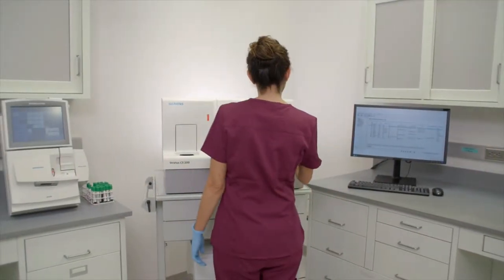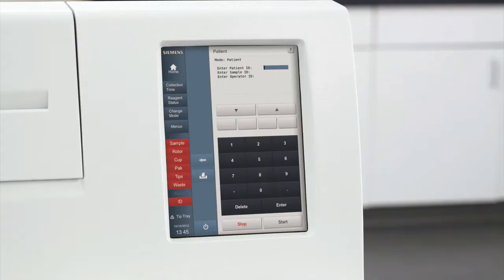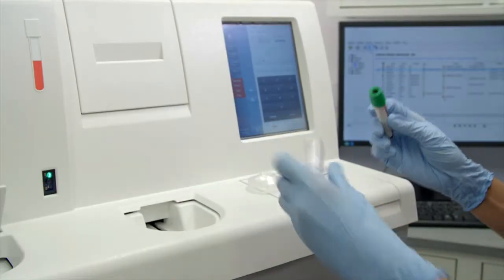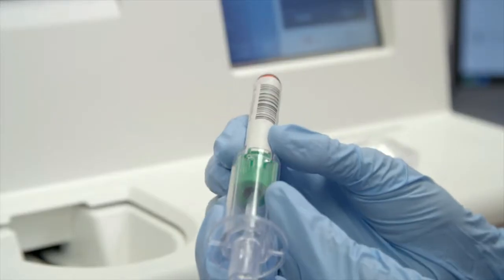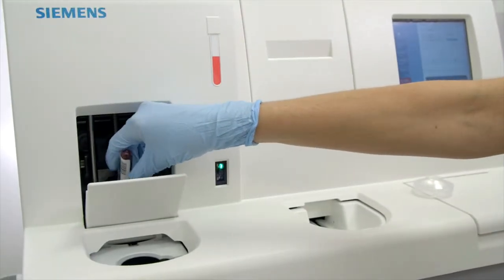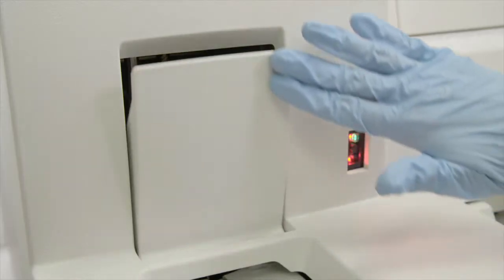Loading the sample is easy too. The Stratus CS200 system has red indicator lights that guide the operator with step-by-step instructions on how to proceed, which reduces the possibility of operator errors. First, locate the cannula, then gently insert the collection tube into the cannula. Then insert the cannula with the collection tube into the system sample door and close the door.